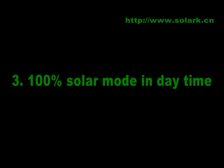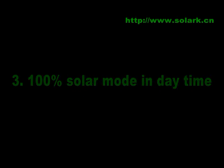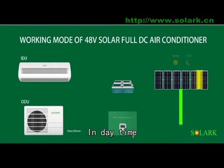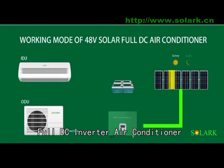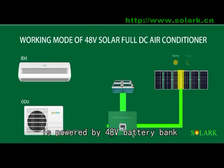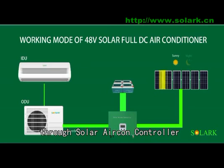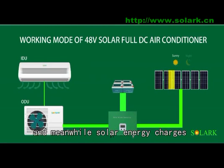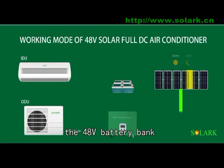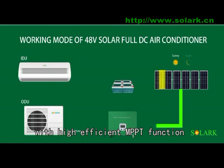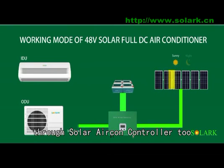100% solar mode daytime: the full DC inverter air conditioner is powered by a 48-volt battery bank through the solar air con controller. Meanwhile, solar energy charges the 48-volt battery bank using a high-efficiency MPPT function through the solar air con controller.